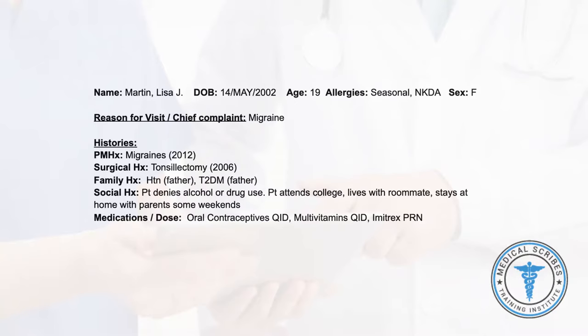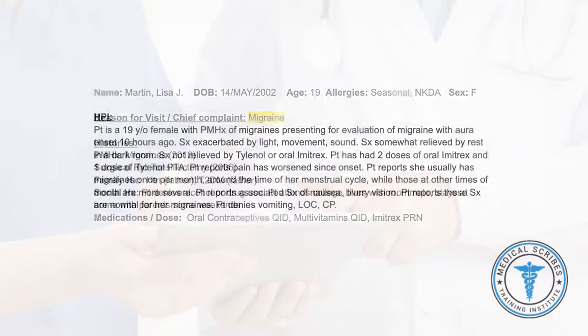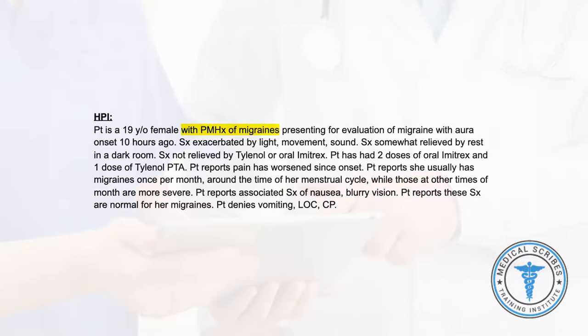First, make sure you have documented a chief complaint — in this case, headache or migraine is acceptable. In cases where the chief complaint has already been entered into the chart, confirm that it is consistent with the patient's report of their symptoms. For the HPI, first document the patient's history of migraines. Because you have the past medical history available, you could have documented this sentence before these conditions were discussed by the provider.